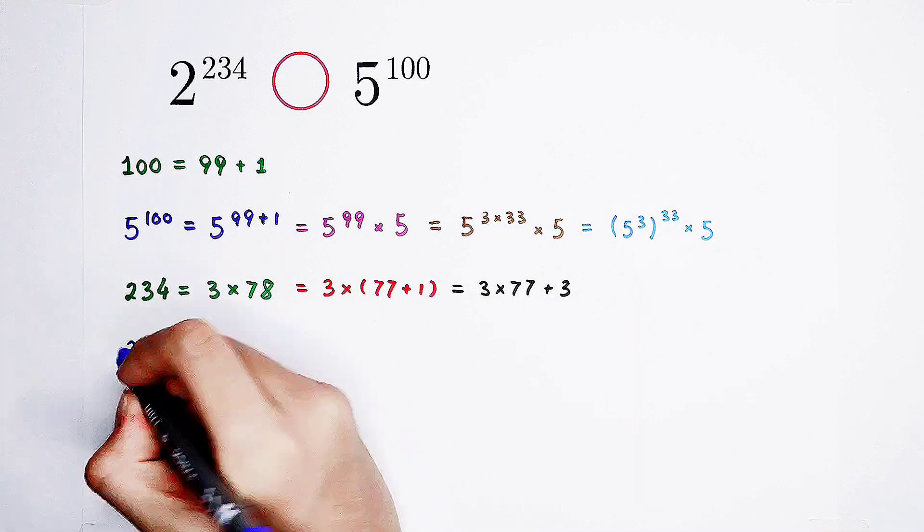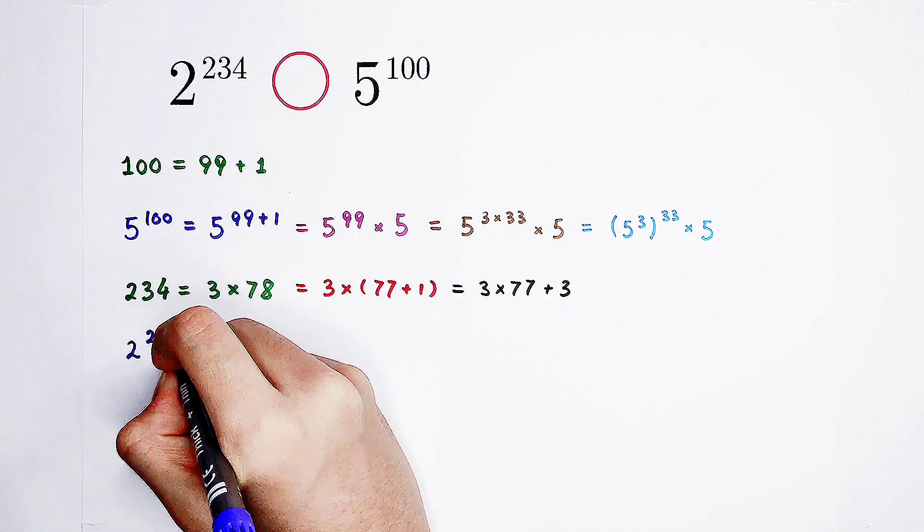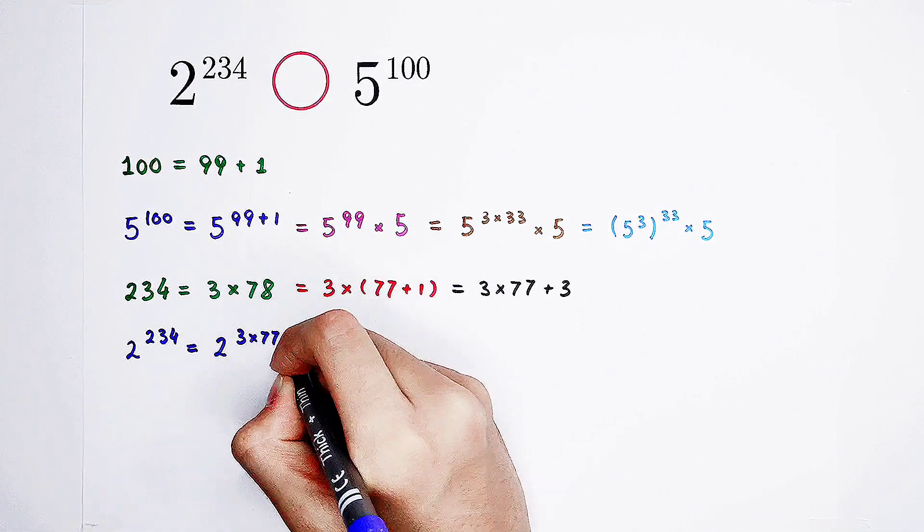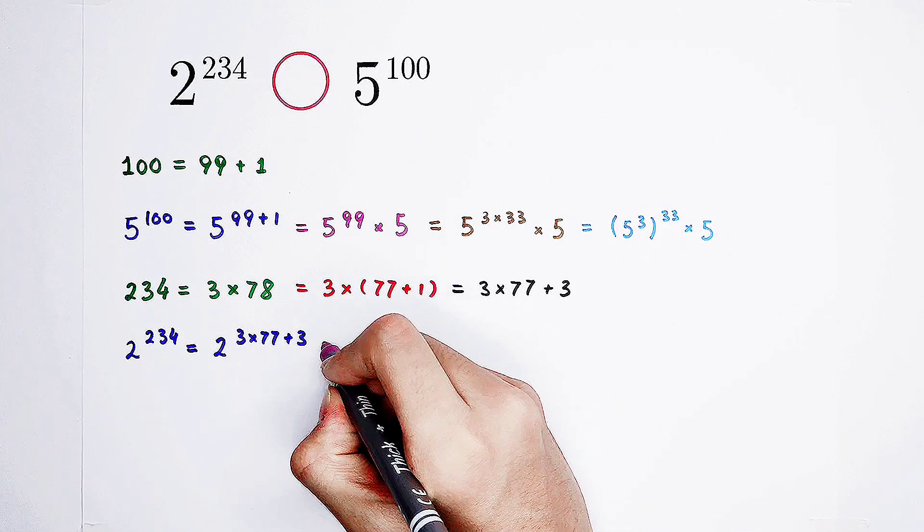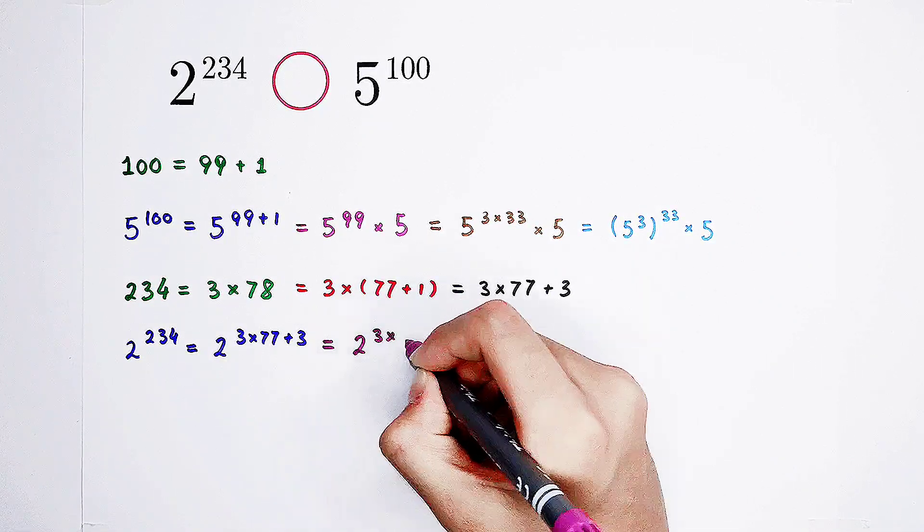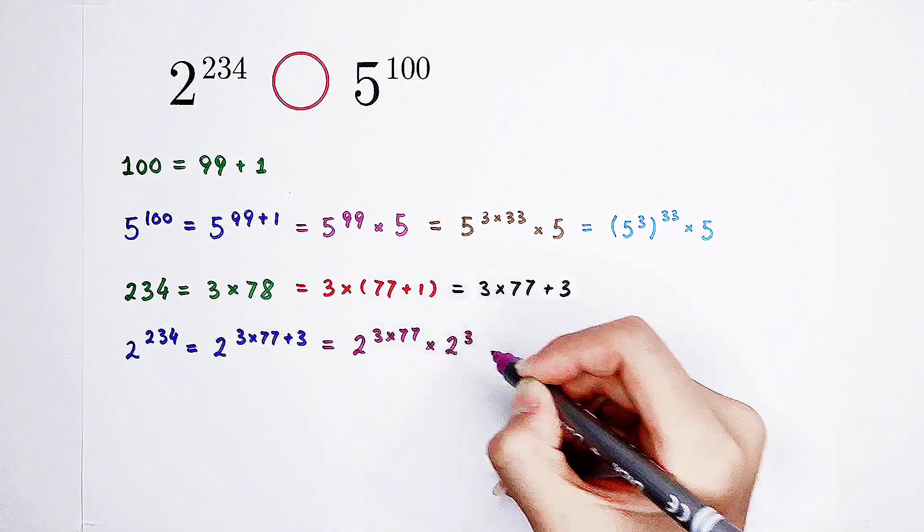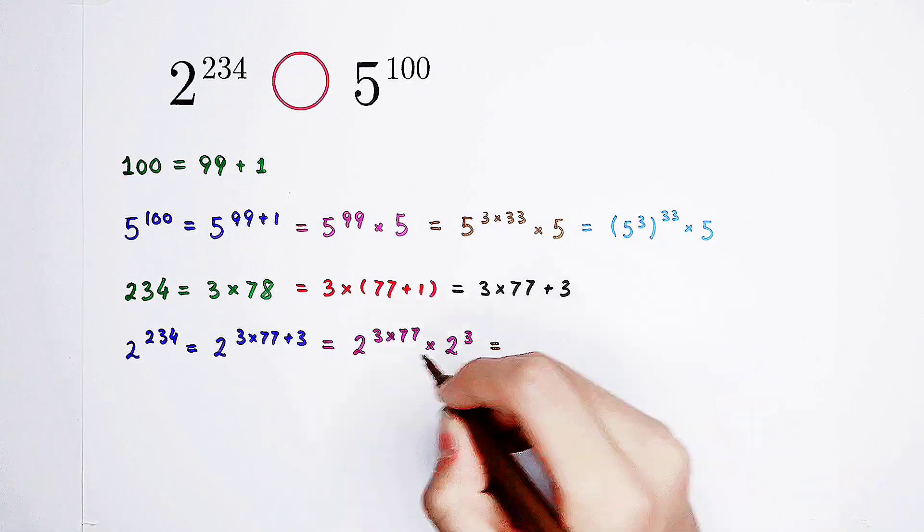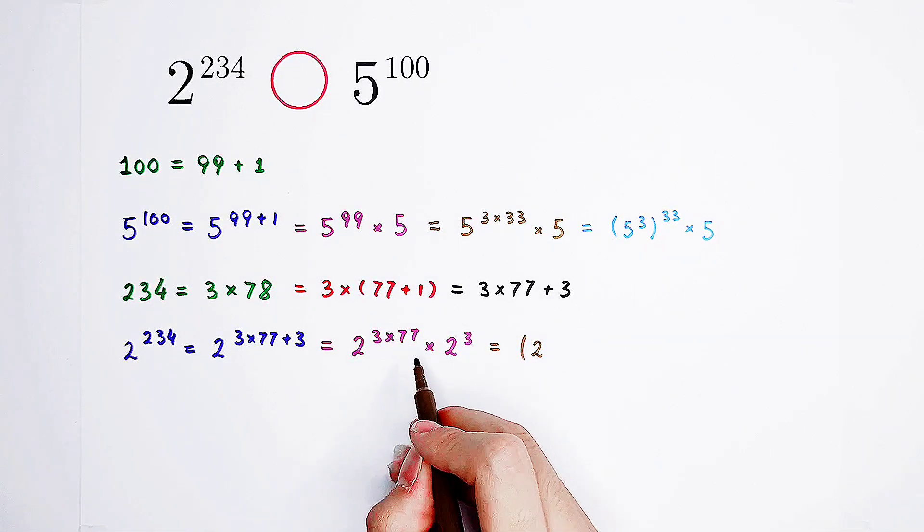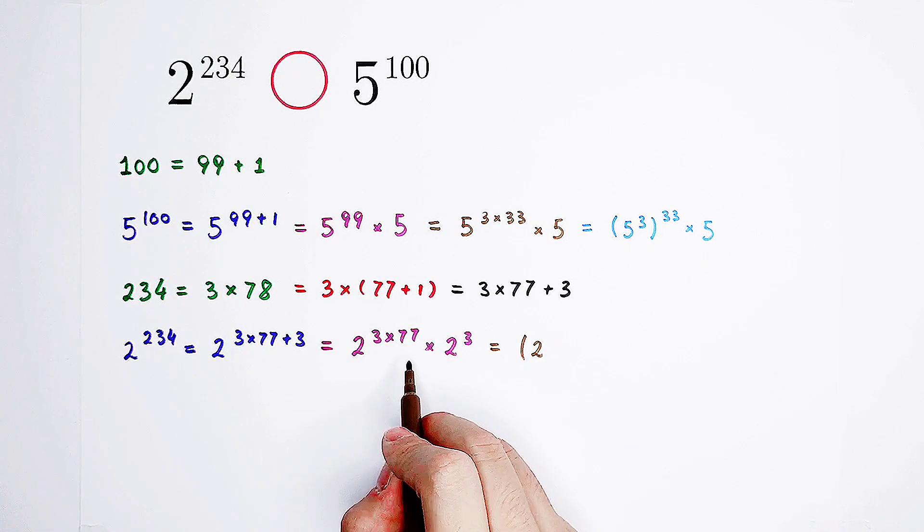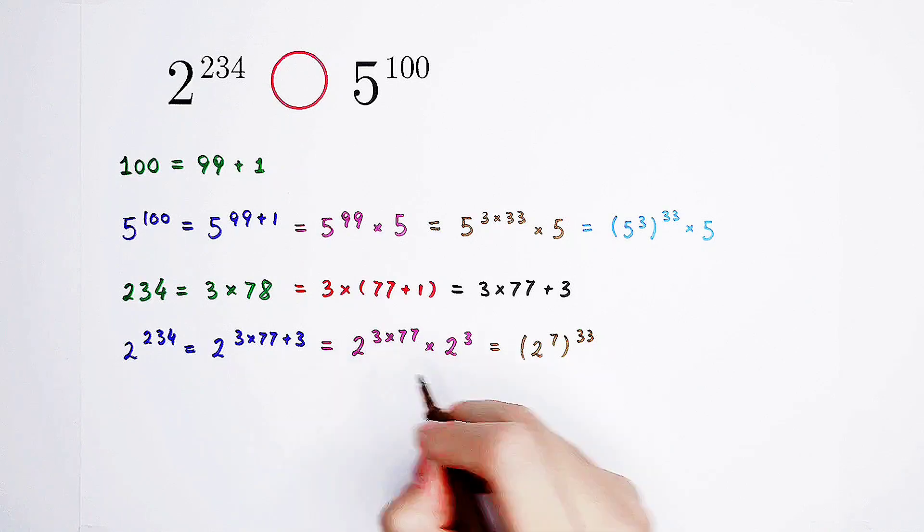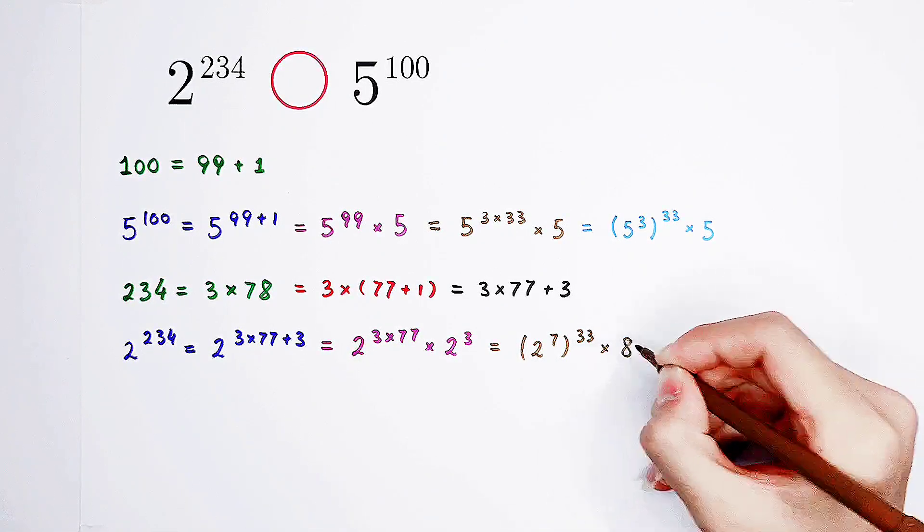Time for changes. 2 to the power of 234. It can be written as 2 to the power of 3 times 77 plus 3. So it is 2 to the power of 3 times 77 times 2 to the power of 3. It is, of course, 2 to the power of... This 77 is 11 times 7. I'm going to give this 11 to 3. And here is 2 to the power of 7, then also the power of 33, because 3 times 11 is 33, then times 2 to the power of 3 is 8.